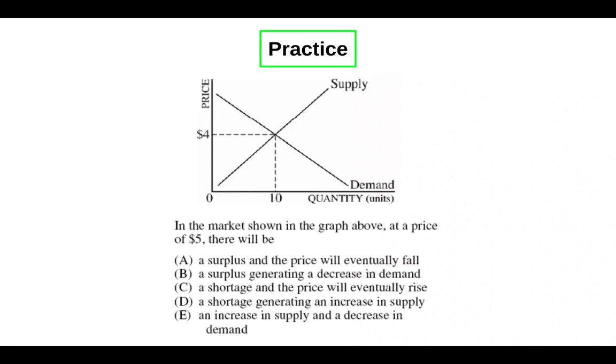So the correct answer here is going to be A. So if the price is above equilibrium, we know that's going to result in a surplus.